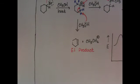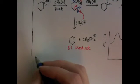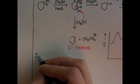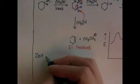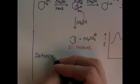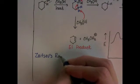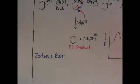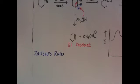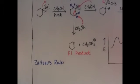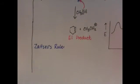Zaitsev's Rule, in Chapter 6, we're only going to use Zaitsev's Rule as a tool to help us choose the primary E1 product. And then in Chapter 7, we are going to talk about Zaitsev's Rule again, and we're going to explain why it is the way that it is, and we're also going to learn it with a little bit more detail than we do in Chapter 6.